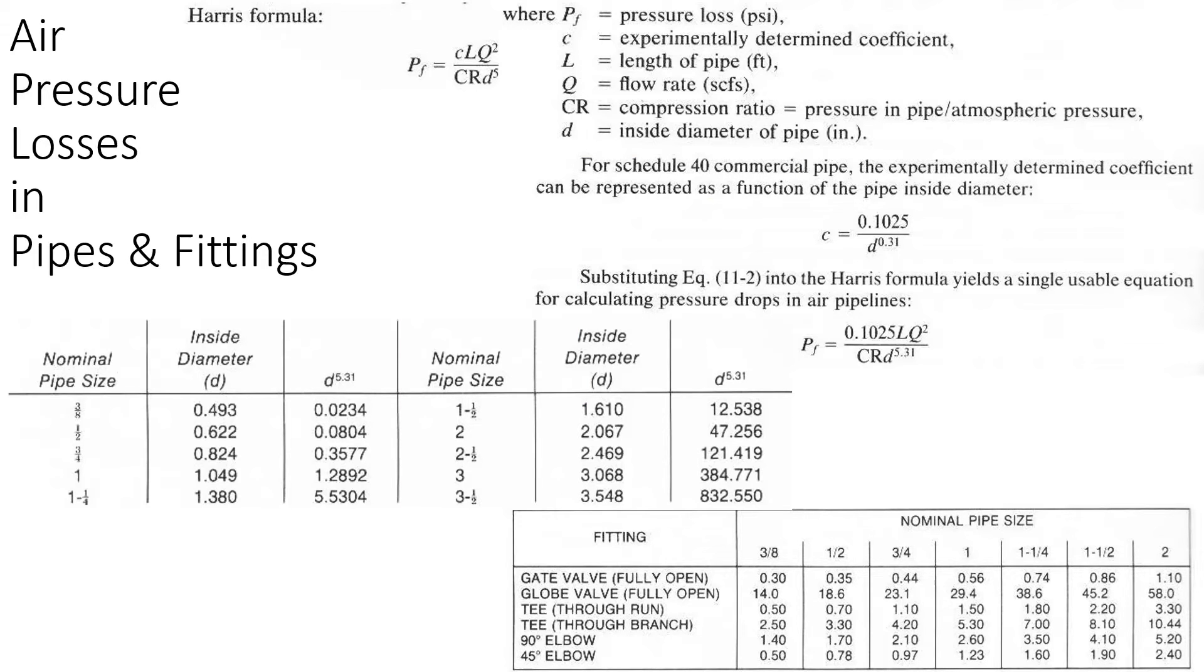Air pressure losses in pneumatic systems can be calculated using the Harris formula. C is a constant for a schedule 40 commercial pipe.